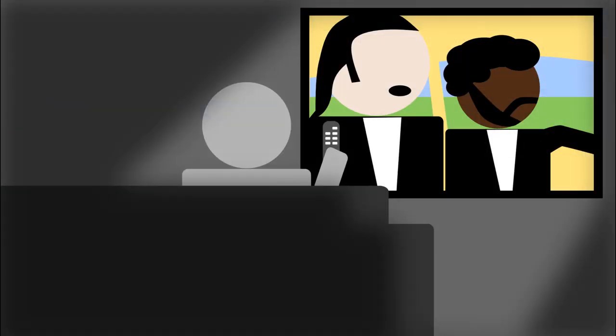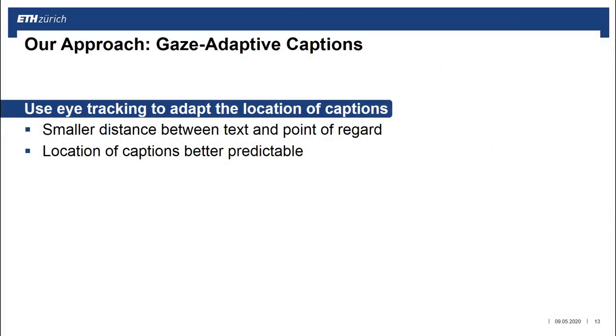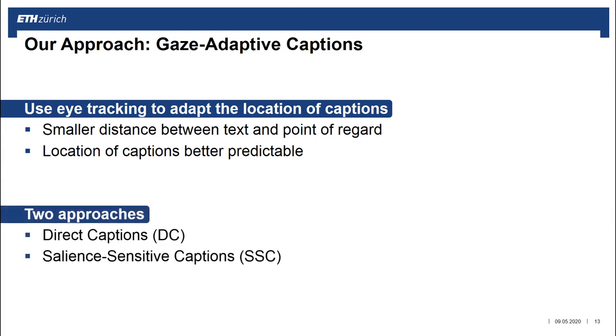In this work we present an approach that can be applied to all types of videos with captions, and that adapts to your individual viewing behavior. If we know where you're currently looking at on your TV, we can adjust the position of a caption to your gaze and integrate the text better into your natural viewing behavior. An eye-tracker attached to your TV would provide exactly this information. We call our approach gaze-adaptive captions and develop two techniques: direct captions and salient-sensitive captions.